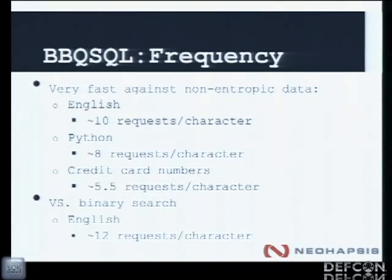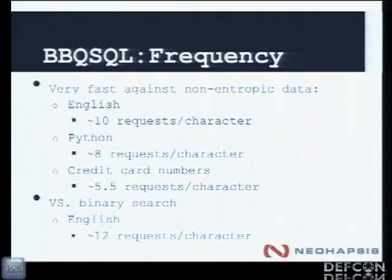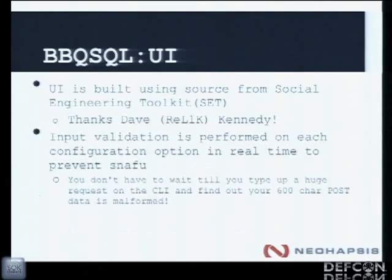For English text, we achieved about 10 requests per character. For Python source code — which is more structured as a programming language — we saw even better performance at 8 requests per character, testing against the full Django source code. For credit card numbers we got about 5.5 requests per character, which is not quite as good since with a normal linear search you'd expect 5. When you compare it to a binary search with English, you get 12 requests per character — so the frequency-based search gives a slight performance improvement for natural language data.